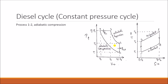The first process is adiabatic compression. Once the air is supplied into the engine cylinder, that piston starts moving and compresses the air. The air is compressed adiabatically — no heat is added or rejected during this compression, hence we call it adiabatic compression. On the TS diagram, the temperature increases from T1 to T2, and the entropy remains the same because no heat is added or rejected.